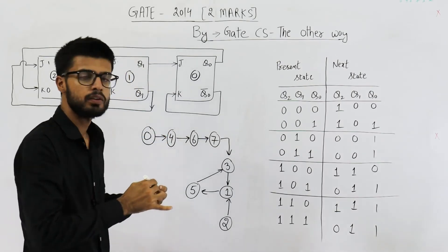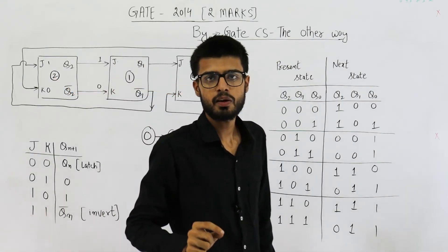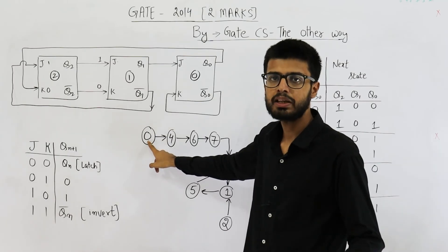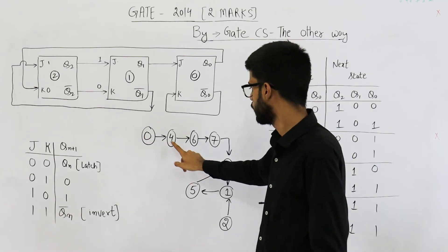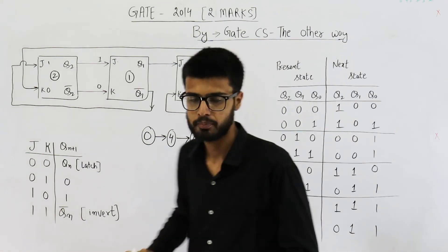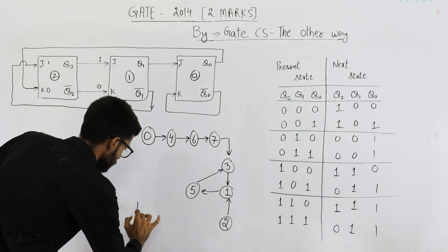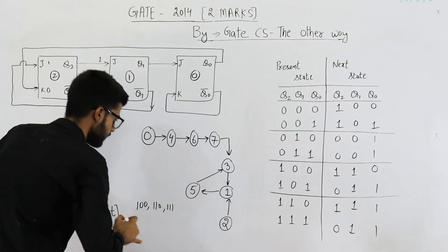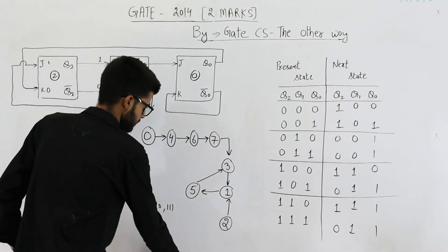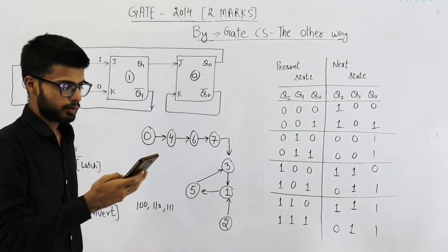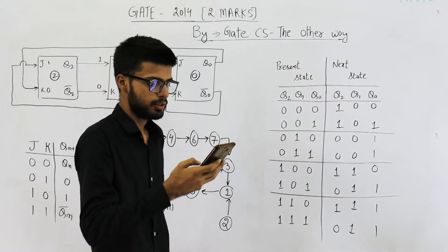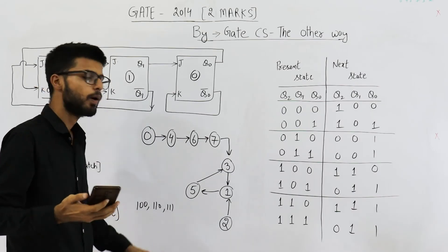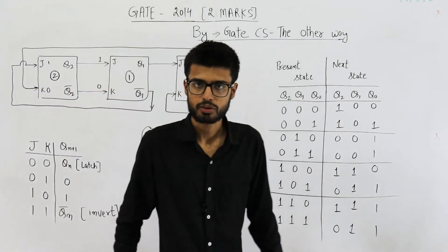Now the question was, if we are currently on state 0, that means currently we are here, what will be the next 3 states? 4, 6, 7. So our answer is 4, 6, 7. Let me see which option matches. It is option C, 1 double 0, double 1 double 0 and triple 1. Yeah. Option C is answer to this question.